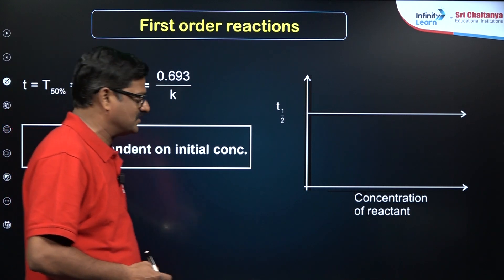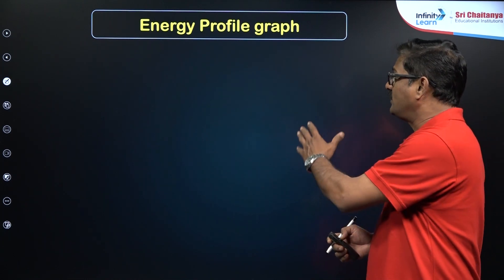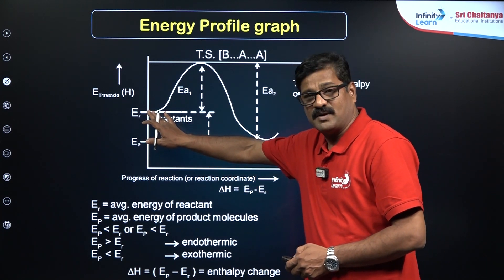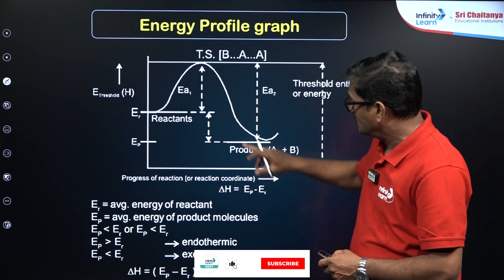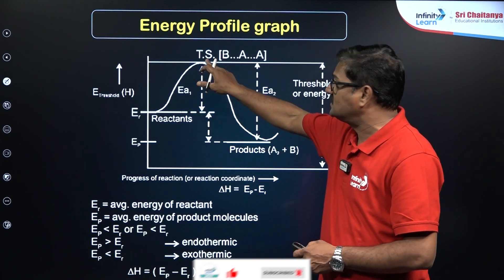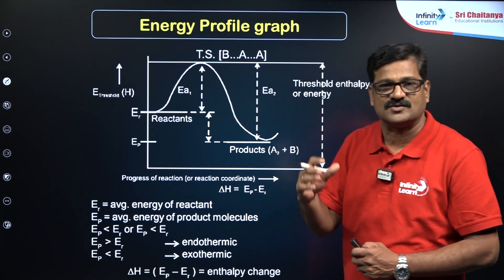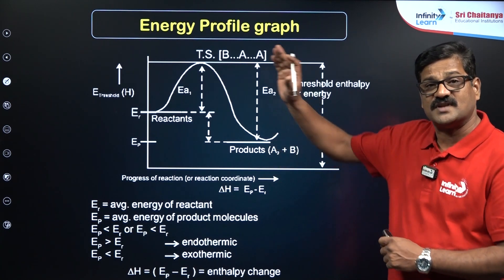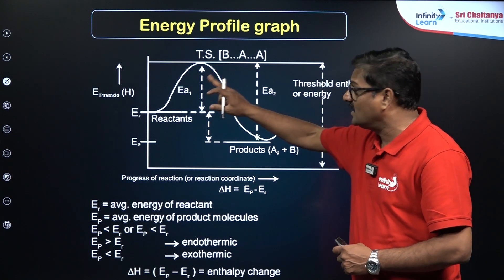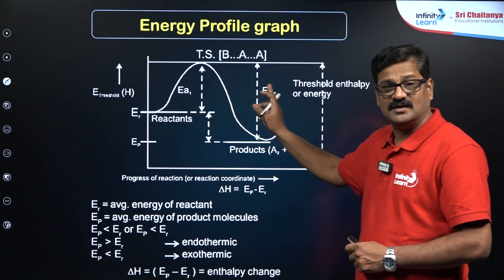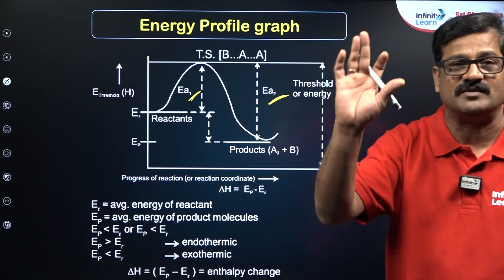Now let us look at the energy profile graph, which explains the Arrhenius expression. The reactant has some energy and must cross the energy barrier to be converted into the product. The minimum energy required to cross this barrier is called the activation energy for the forward reaction (Ea₁). The energy gap between products and reactants is the enthalpy of reaction. For the reverse direction, the activation energy is Ea₂. The difference between Ea₁ and Ea₂ gives a key question type in the NEET examination.